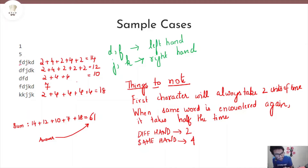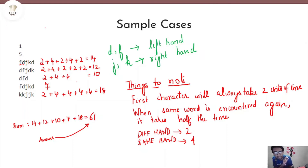Looking at the first word: the first character is F, but no matter what the first character is, Chef will always take 2 units of time to write it. So this is 2. Now the second character is D, also written using the left hand — same as F. Hence, for D, plus 4 is added, making the running total 2 plus 4.